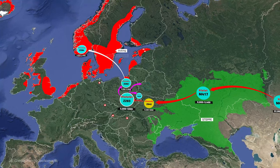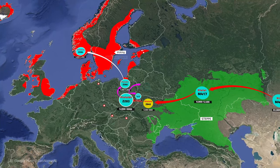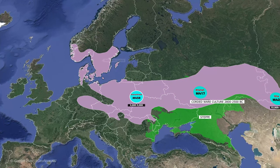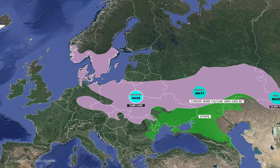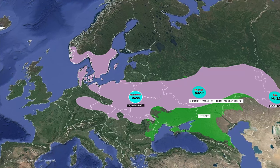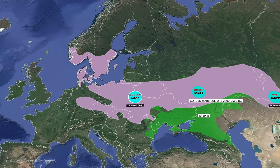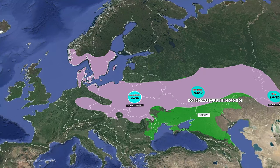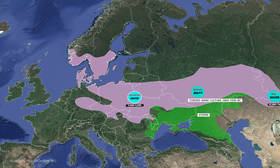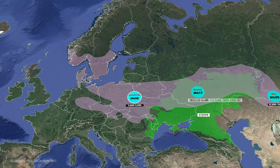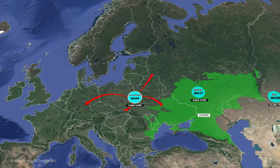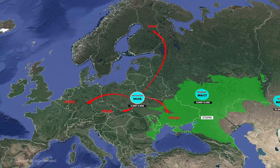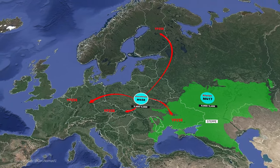Y-DNA I1, R1b, and R1a Z284 are most commonly observed in Vikings. R1a M458, branched from Z283, is closely related to the Corded Ware culture formed between the Central European Copper and Early Bronze Age. This haplogroup is a Baltoslavic marker found throughout Central and Eastern Europe except for the Balkans, with limited observations in Western Europe. Among the branches of M458, YP256 spreads to Central Europe, Ukraine, Finland, and Slovakia.